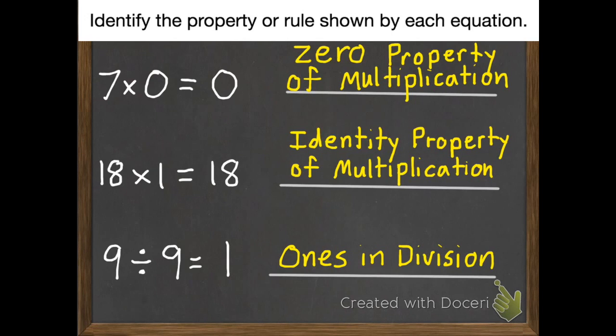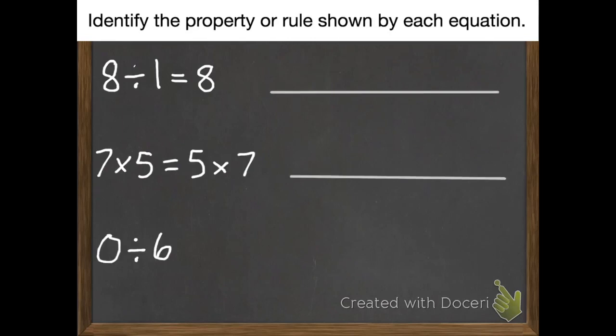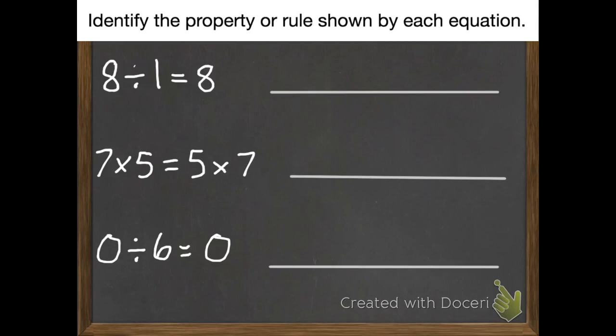Now you're going to try 3. Identify the property or rule shown by each equation. 8 divided by 1 equals 8. 7 times 5 equals 5 times 7. And 0 divided by 6 equals 0. Pause it, write which property or rule it is, and then unpause to check your work.